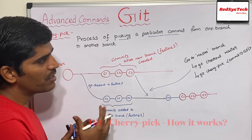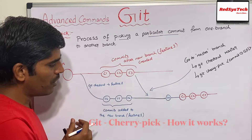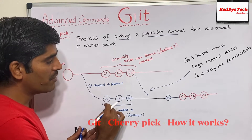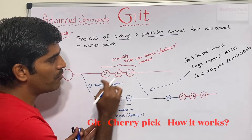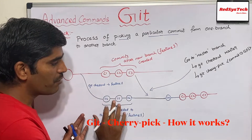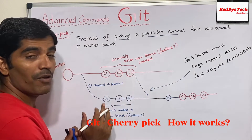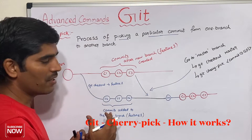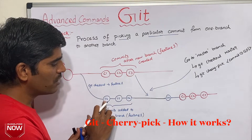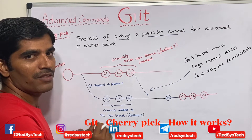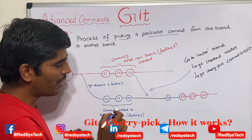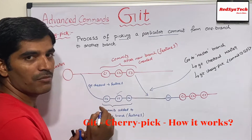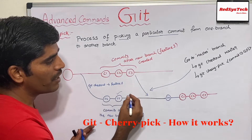Now, for some reason, if C4, C5, C6 are there in the Feature branch but not in the master branch, and you want to take everything from Feature to master, you can go for rebase. But if for some reason you don't want C4 but only want C5, then you can pick up only C5 and get it into master branch.